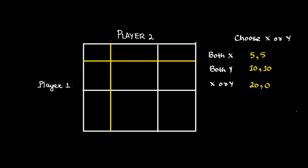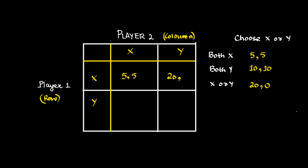You can also put this in a tabular form. Player 1 is a row player and player 2 is a column player. Both players have two strategies, X and Y. When player 1 chooses X and player 2 also chooses X, the payoffs are 5, 5. When player 1 chooses X and player 2 chooses Y, then player 1 gets 20 and player 2 gets 0.